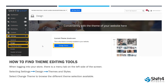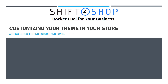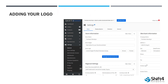Now, once you've actually chosen a theme for your store, you can then further edit and change things like your logo. We can edit colors, fonts, and all different parts of our store. The first thing that we're going to take a look at adding today is actually adding that logo to your store.